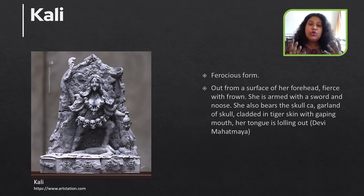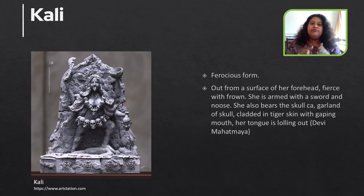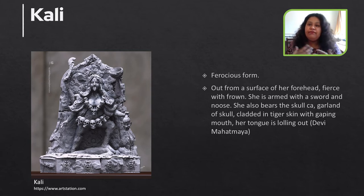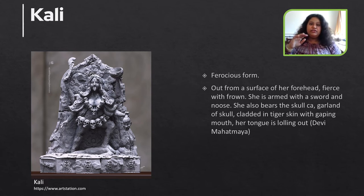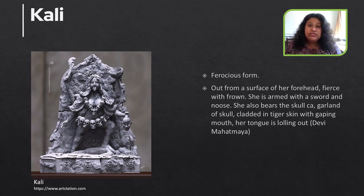She became so furious that even after the battle ended, the gods were not able to stop her. All the other gods and goddesses came to Shiva and asked him to stop his wife, since Devi is the counterpart of Shiva. They said please stop her because the battle is over and she is destroying everything. What Shiva did was lay on the floor. When Kali was ferociously walking, she kept her leg on Shiva's chest. In that moment she became very calm and felt that she had committed a sin by placing her foot on her husband's chest. In shame, her tongue came out and she became calm. This is the story of Kali and why her tongue is out.